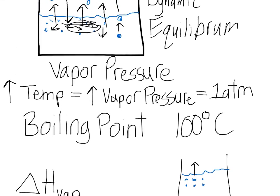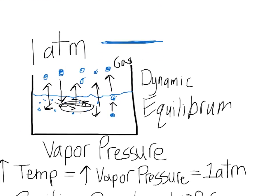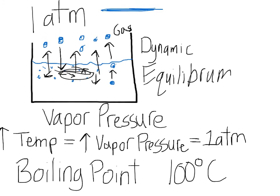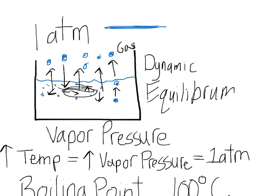Understanding the equilibrium between the liquid and the gas is neat, especially with dynamic equilibrium. It sort of makes sense — if you're in a high humidity area, there's a lot of water vapor in the air, so your sweat won't evaporate as readily. That's why you stay wet and sweat a lot. Conversely, in a low humidity area, your sweat evaporates immediately and you can get dehydrated very easily. That's it for this one — next we'll be looking at the liquid and solid.